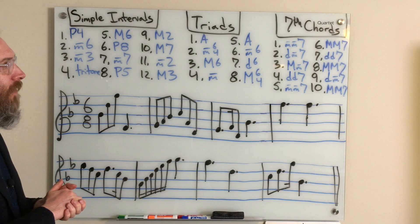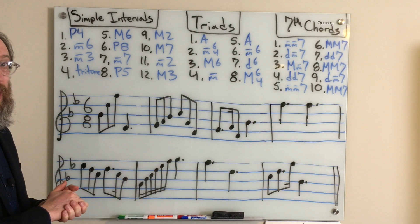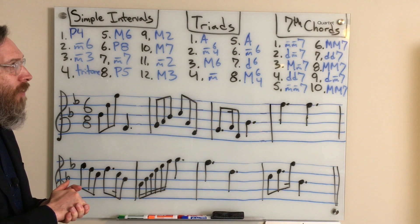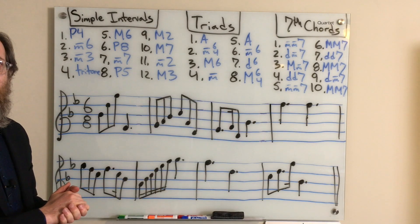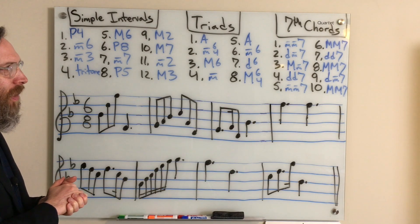6 was a major major 7. 7 was a diminished diminished 7. 8 was a major major 7. 9 was a diminished minor 7, and 10 was a major major 7.